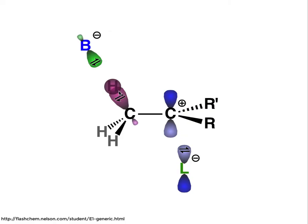Notice that as that new pi bond is forming, this SP3 hybridized orbital becomes effectively a pi orbital overlapping with the empty P orbital on the right-hand carbon.